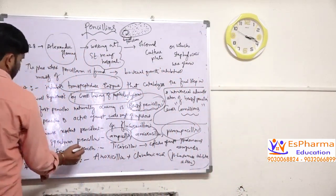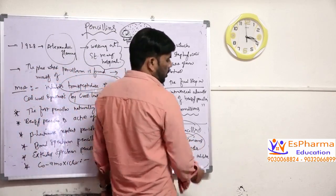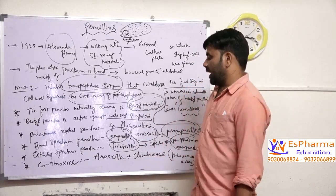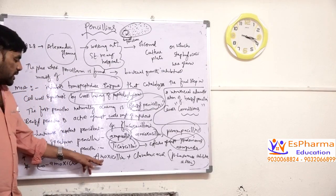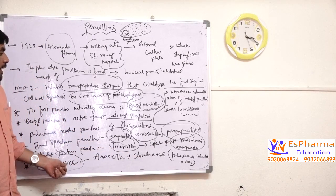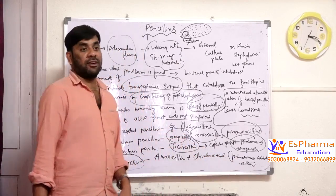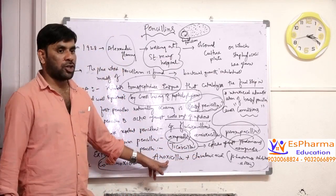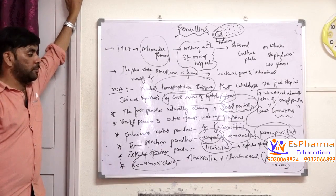We have some extended spectrum penicillins like ticarcillin. Ticarcillin is used in the treatment of Pseudomonas aeruginosa infection. The last one is called co-amoxiclav. Co-amoxiclav is a combination of amoxicillin plus clavulanic acid. Clavulanic acid is a beta-lactamase inhibitor — it inhibits the enzyme beta-lactamase that bacteria synthesize. It is given in combination with amoxicillin, and that combination is called co-amoxiclav.